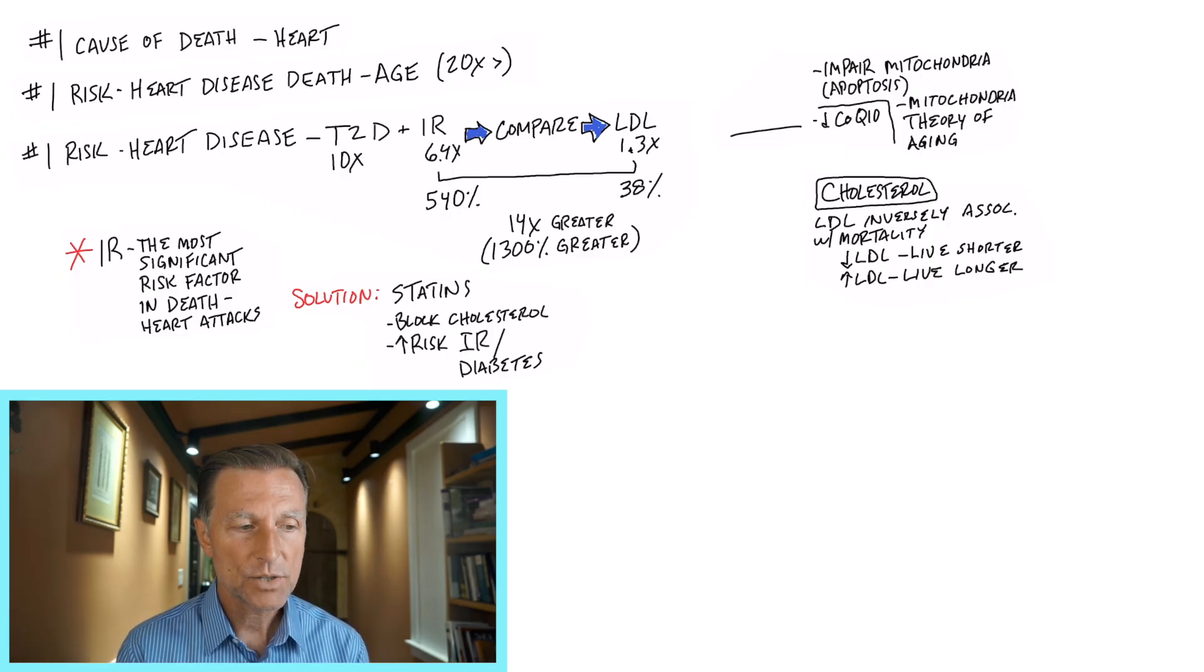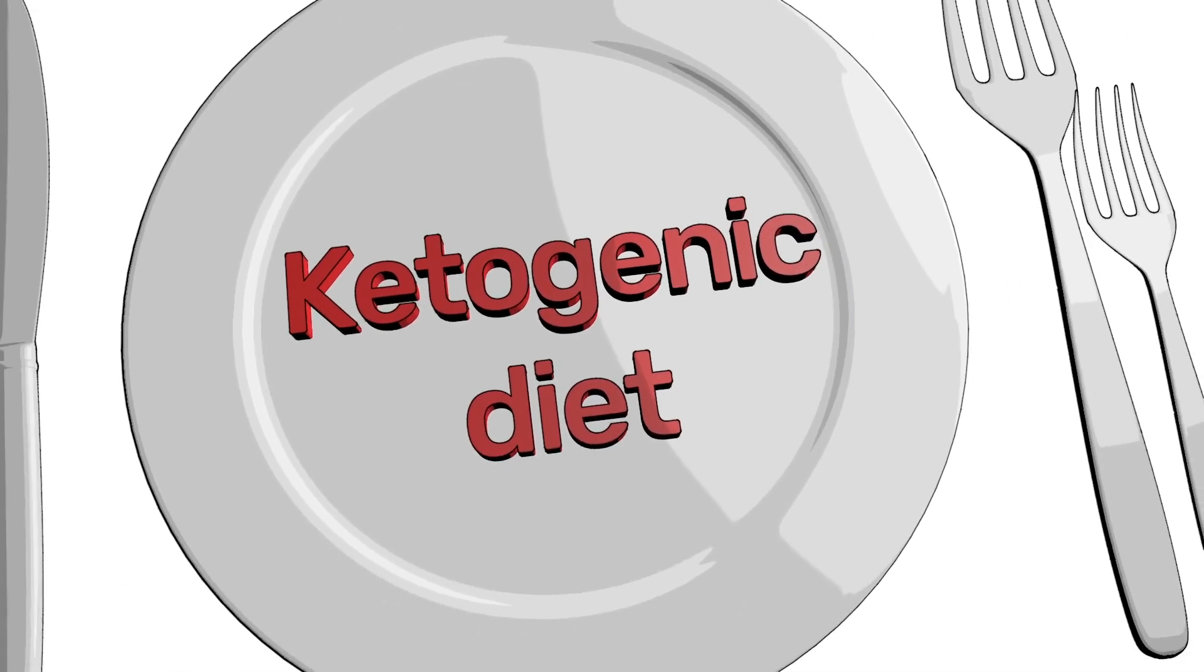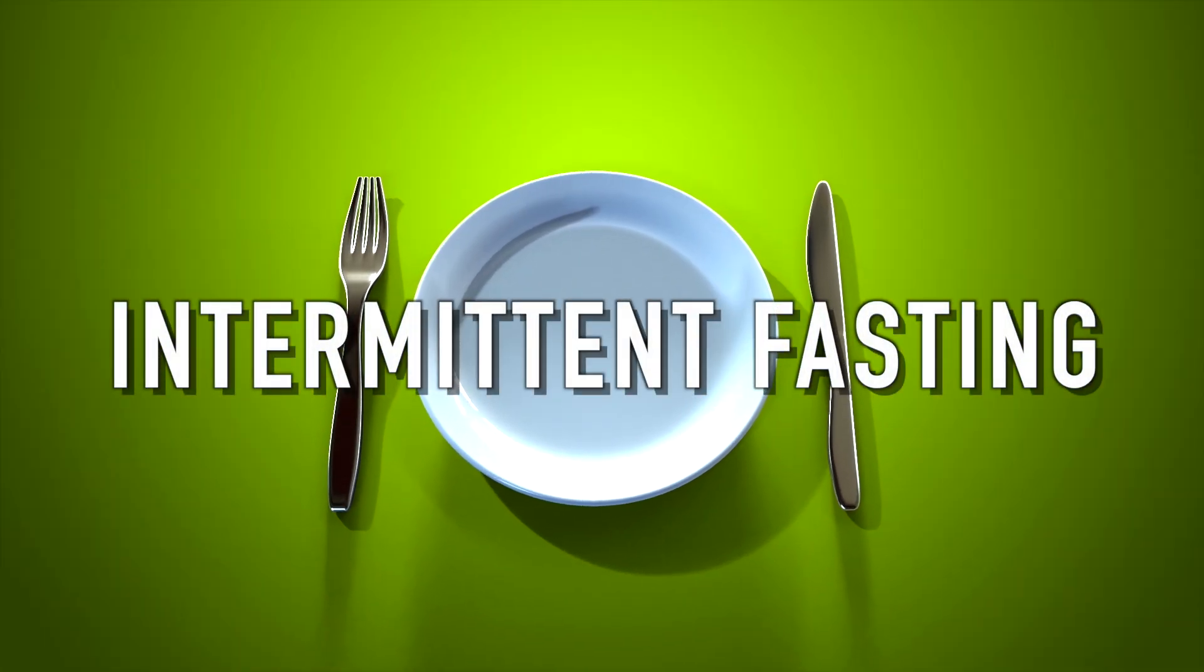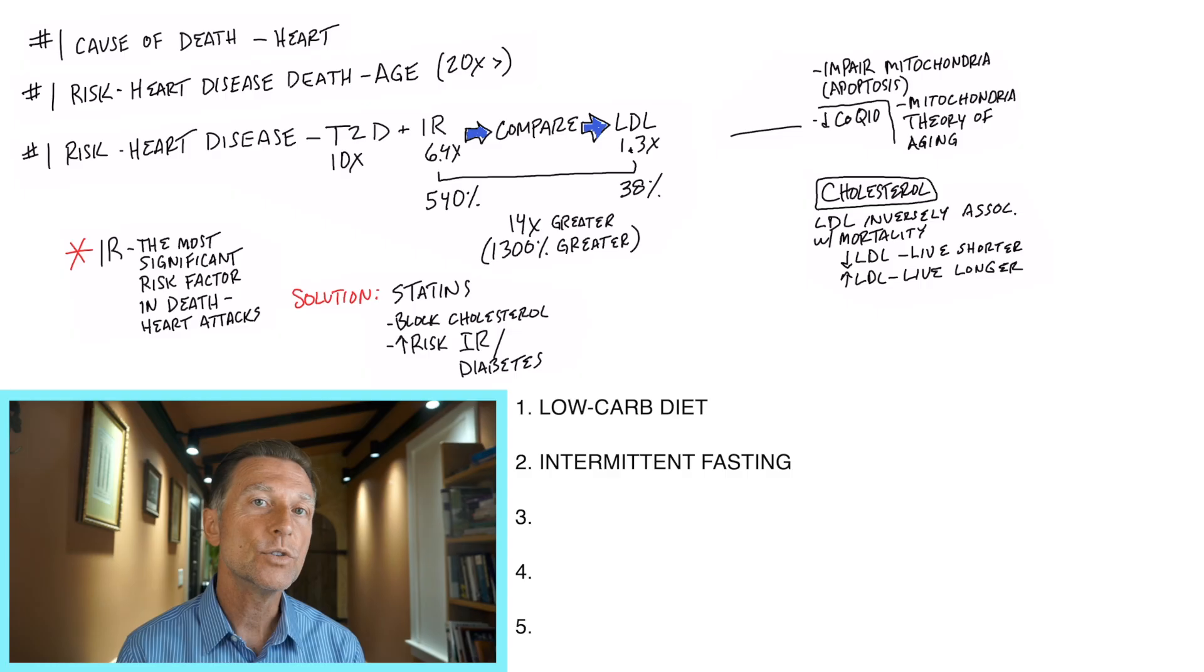So how do you do it? The biggest way is to start going low carb. That is called the ketogenic diet. Then you implement intermittent fasting, cut out the snacks, go to two meals a day.